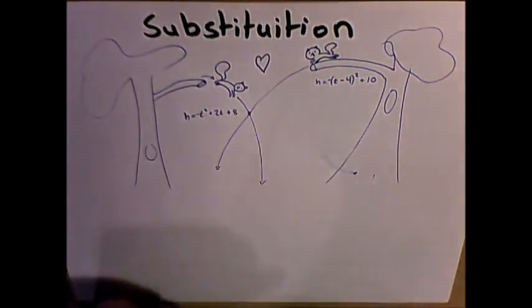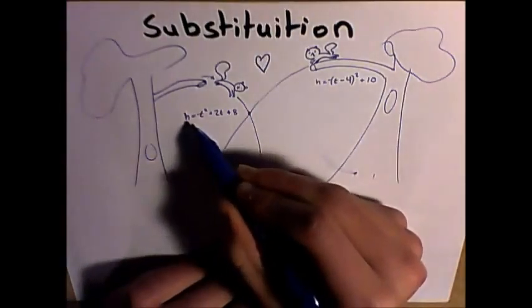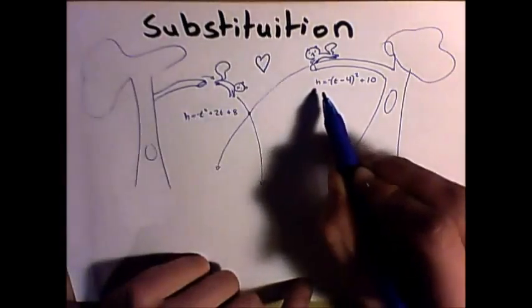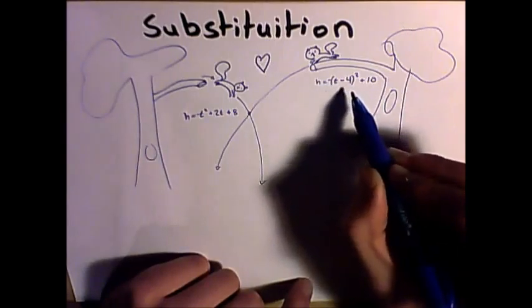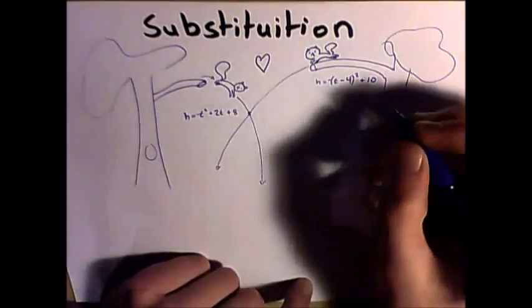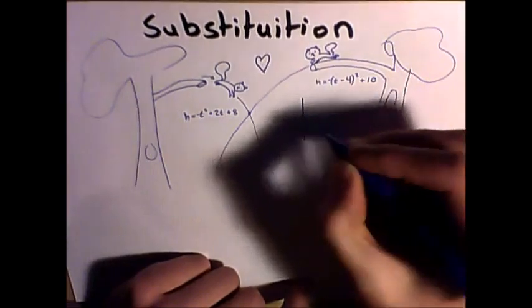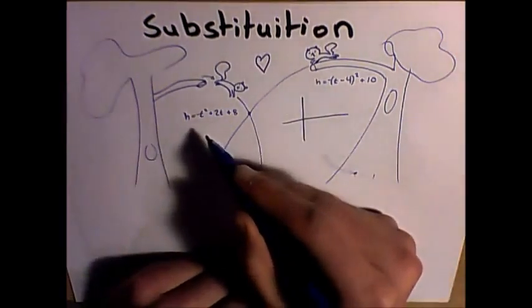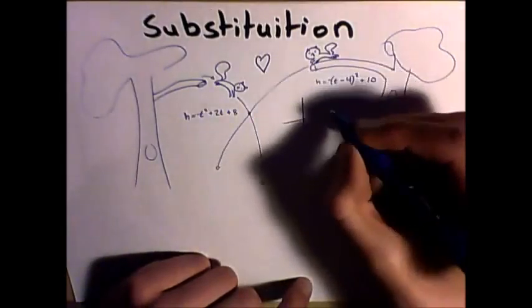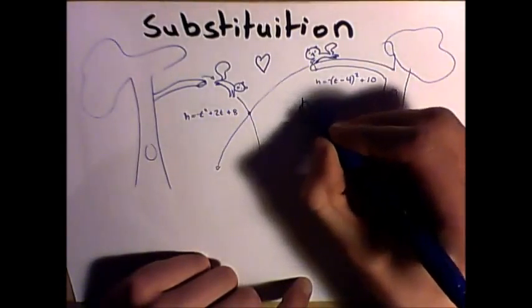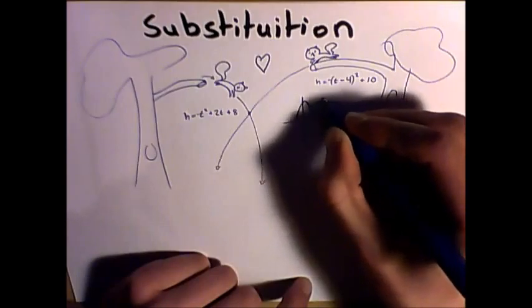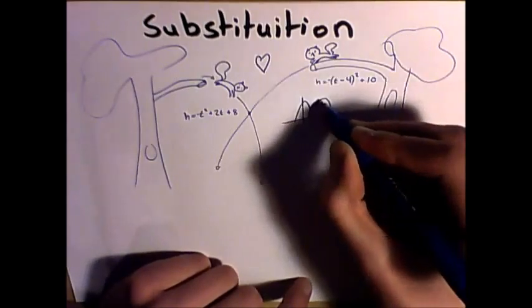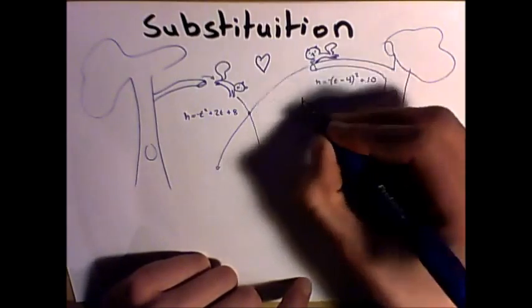So this equation is modeled by h equals negative t squared plus 2t plus 8, and h equals negative bracket t minus 4 bracket squared plus 10. So we know that we have a quadratic relationship here. This graph will look something like this, and this graph will look something like this. And this makes sense because you can see two squirrels jumping here and colliding here and embracing in love.